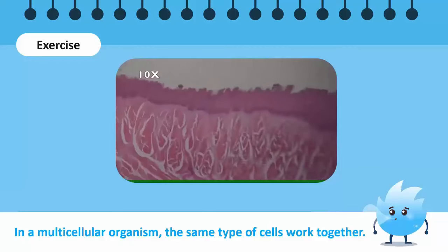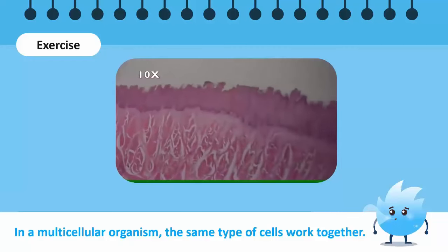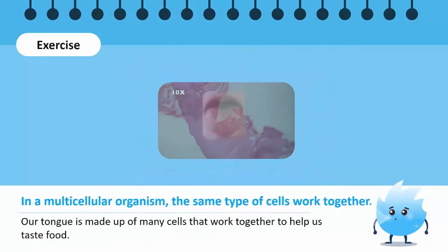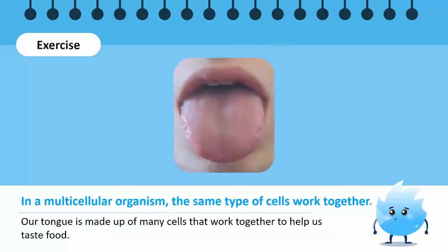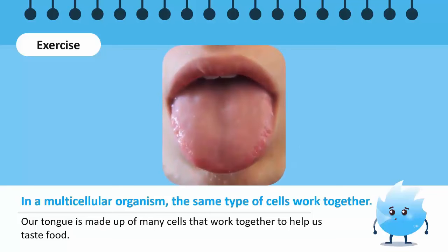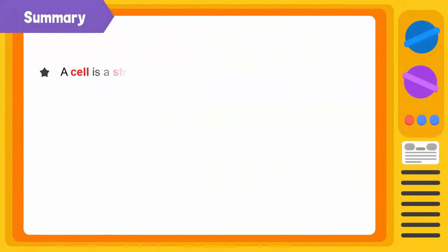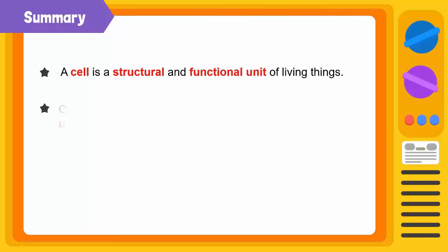For example, our tongue is made up of many cells that all work together to help us taste food. Let's summarize: a cell is a structural and functional unit of living things.